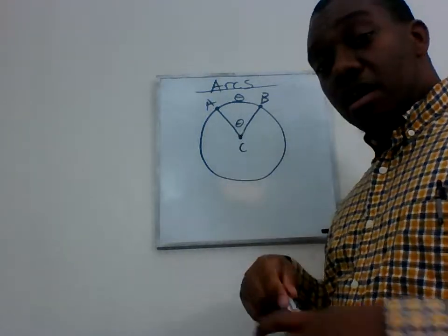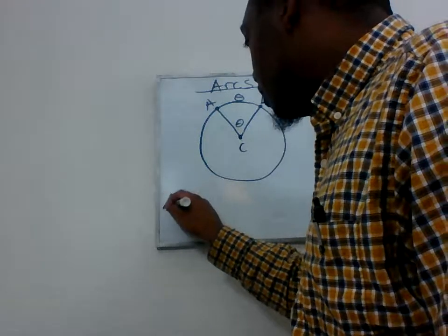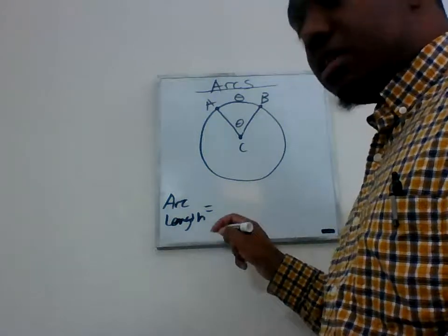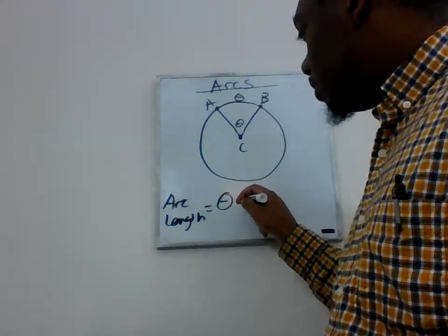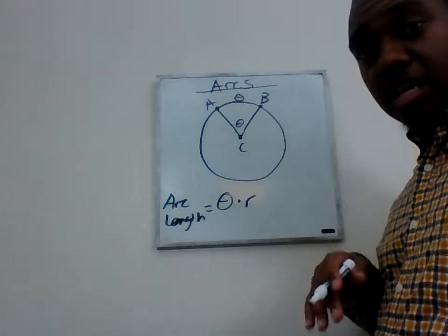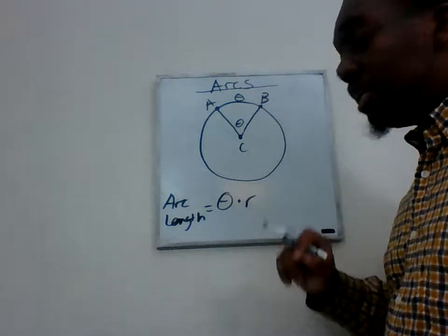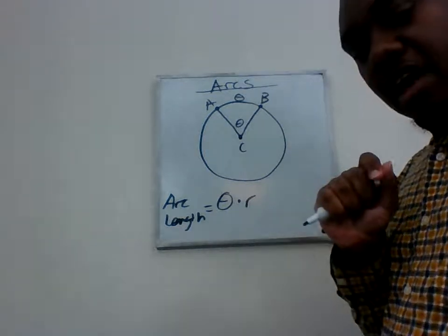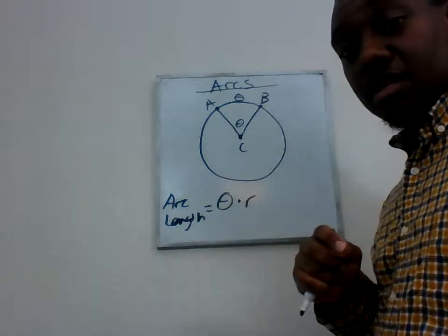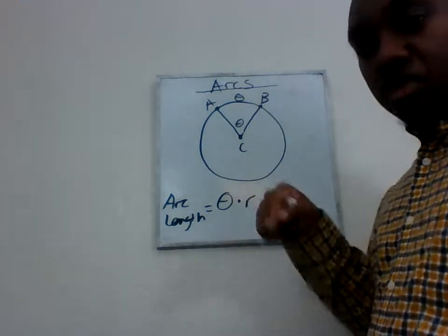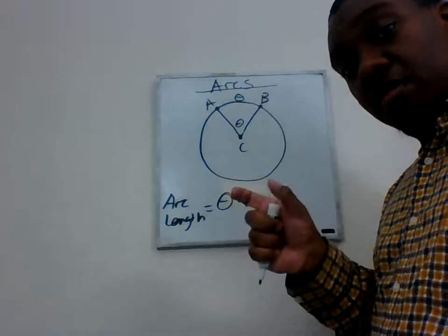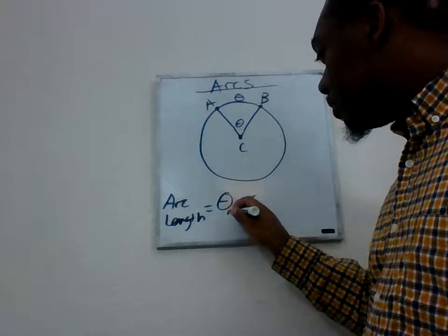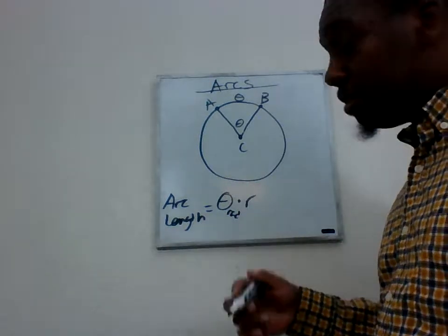So in order to find arc length, essentially the only thing we need to know is the angle and the radius. If we know the angle, we can multiply it times the radius and we know the arc length. There is one caveat: the angle needs to be in radians, because the circumference formula uses 2π, which is also in radians.